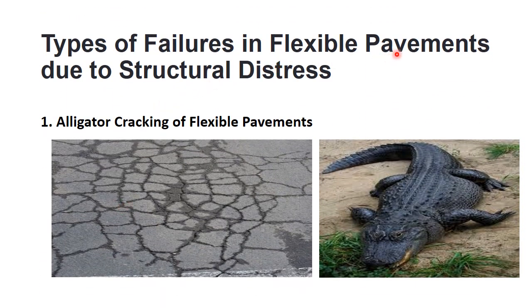The first type of structural distress is alligator cracking. The shape resembles the skin of an alligator, which is why it is termed alligator cracking. These are also called map cracking and represent fatigue failure caused in asphalt concrete. A series of interconnected cracks are observed due to such distress. The tensile stress is maximum at the asphalt surface, which is the position where cracks are formed.